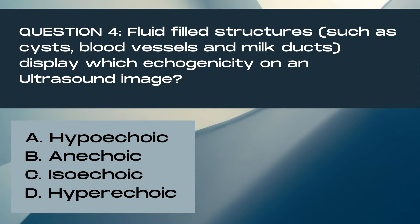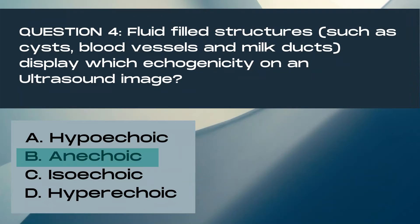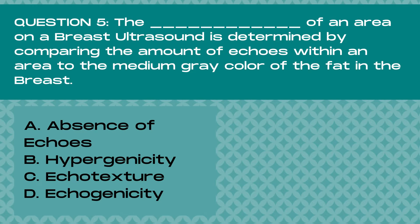Question 4. Fluid-filled structures such as cysts, blood vessels, and milk ducts display which echogenicity on an ultrasound image? A. Hypoechoic, B. Anechoic, C. Isoechoic, or D. Hypoechoic. And the answer is B. Anechoic. Anechoic structures on an ultrasound are black inside, which indicates an absence of echoes. An anechoic area indicates that no reflections are returning to the transducer from that area.